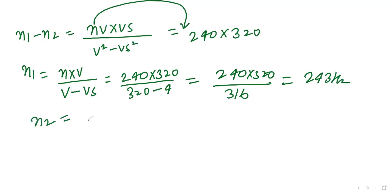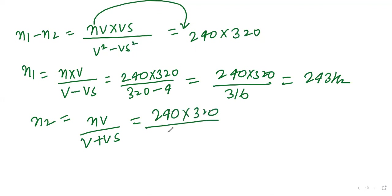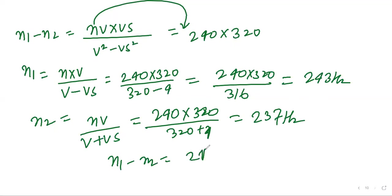For n₂: n₂ = 240 × 320 / (320 + 4) = 240 × 320 / 324 ≈ 237 hertz. Subtracting: n₁ − n₂ = 243 − 237 = 6 hertz. So the number of beats heard by the man is 6 hertz. In this way you can also find the number of beats.